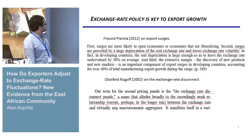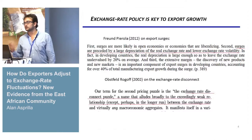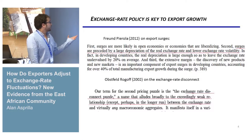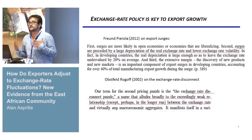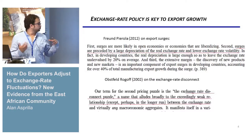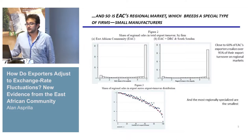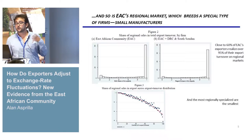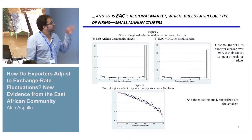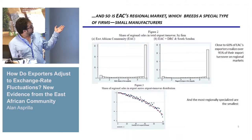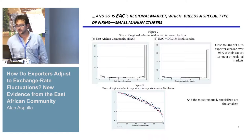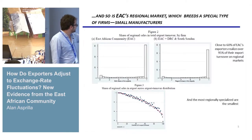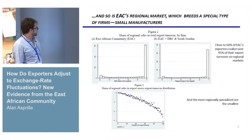Exchange rate policies do kick-start export growth. A paper by Freund and Pierola showed that export surges are preceded by large real exchange rate depreciation and lower volatility, making exporters more competitive. There is also the 'exchange rate disconnect' result, showing no evidence of prices in consuming countries reacting to macroeconomic changes. Importantly, small manufacturers are a key focus: in the EAC, close to 60% of exporters realize over 95% of their export turnover on regional markets, though these are smaller firms.